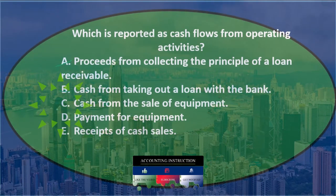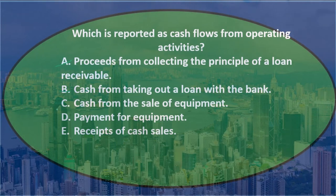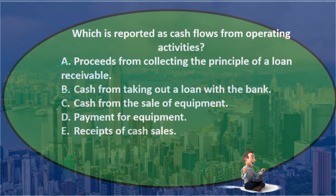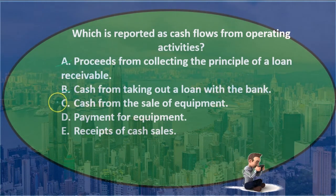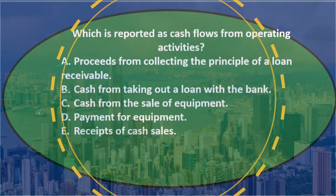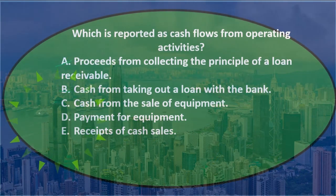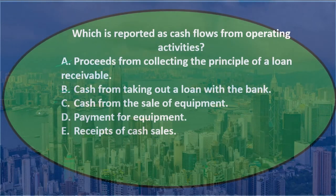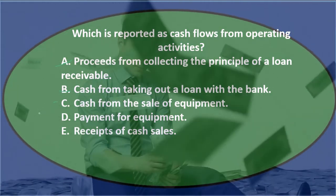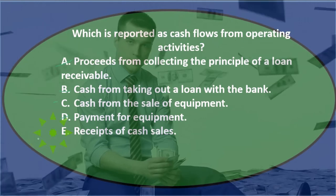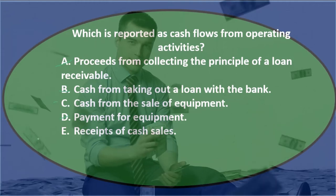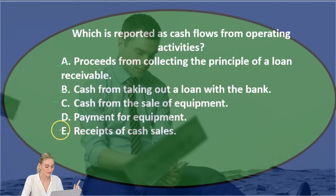Option C: cash from the sale of equipment. We'd debit cash, credit equipment, possibly debit accumulated depreciation, and possibly have a gain or loss. We might think the gain or loss is on the income statement, making it operating — so we'll keep that for now. Option D: payment for equipment — debit equipment, credit cash. Neither are income statement accounts, so probably not operating. Option E: receipts of cash sales — debit cash, credit sales, which is clearly revenue, an income statement account. So that would clearly be operating.